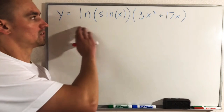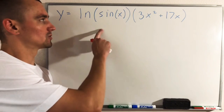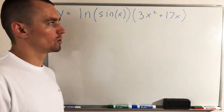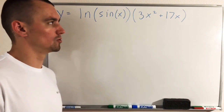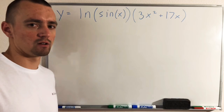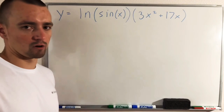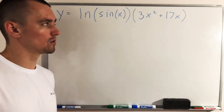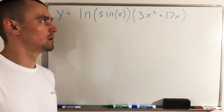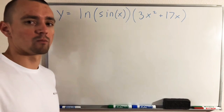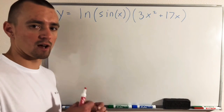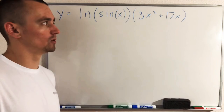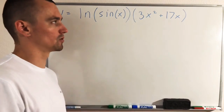We're going to find the derivative of the function y equals the natural log of sine x, times 3x squared plus 17x. When you look at a function like this and you're trying to find its derivative, you have to figure out the order in which you're going to apply the differentiation rules.